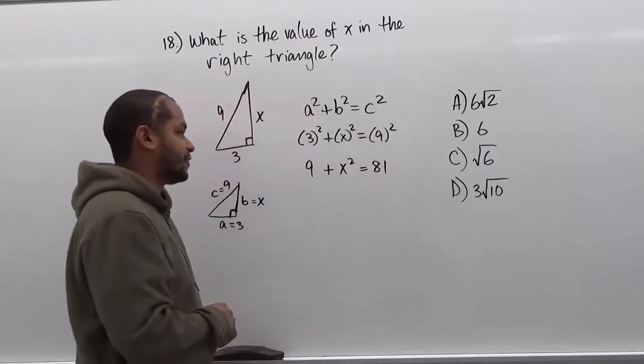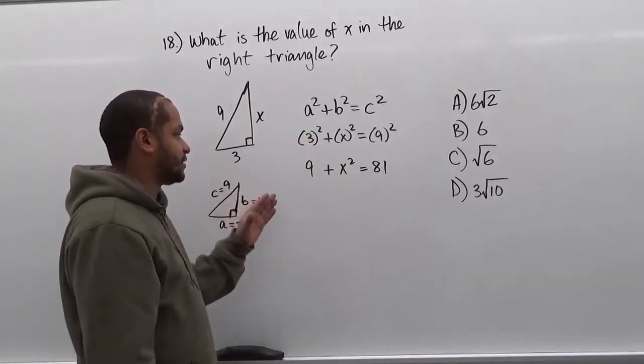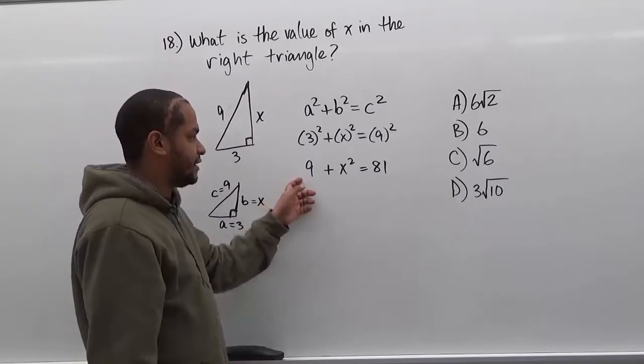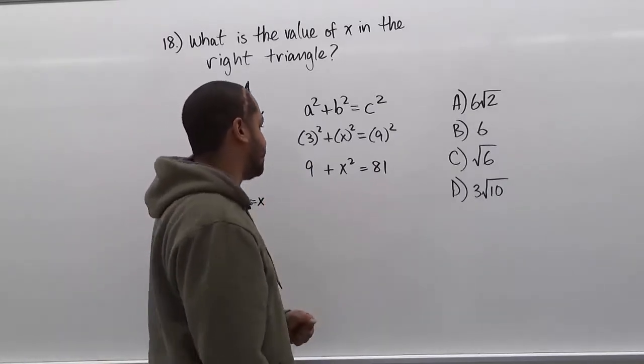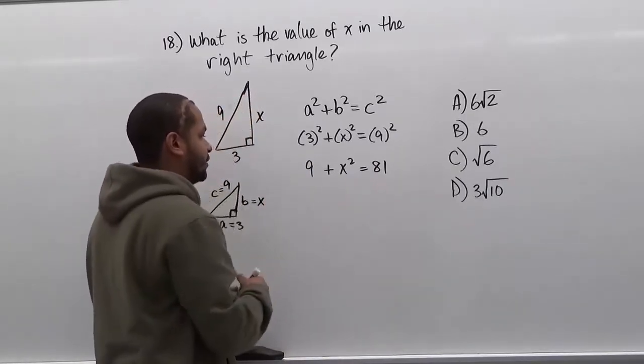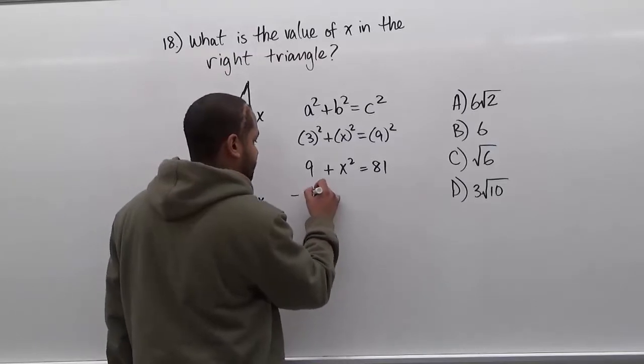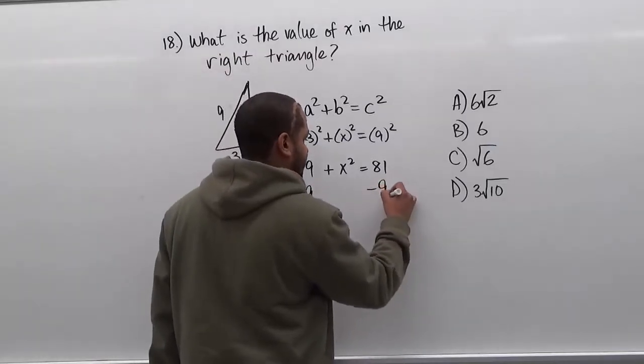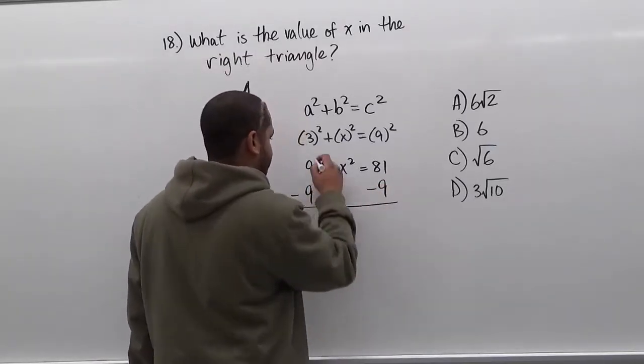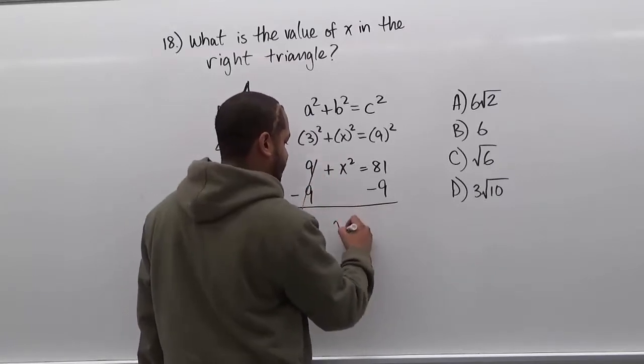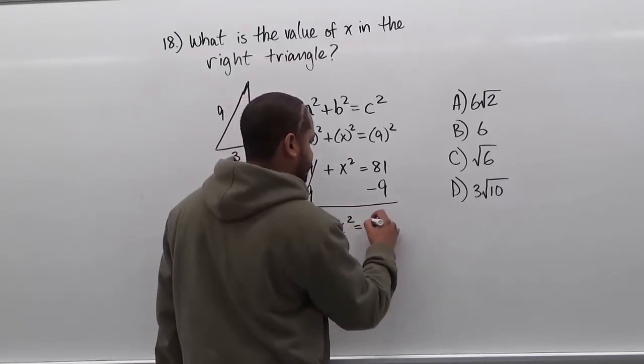Now to solve for the value of x, we need to use the additive inverse against 9 to transpose it to the side with 81, so we can get x² alone. We're going to subtract 9 from both sides. These two 9's cancel out to 0, and we have x² = 72.